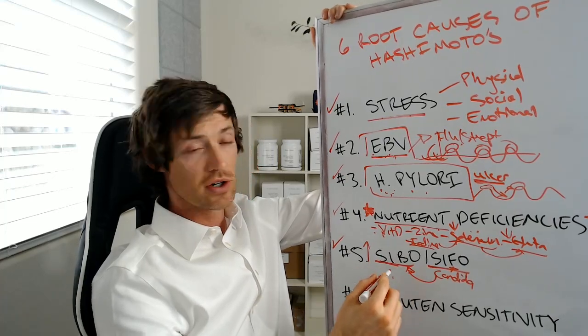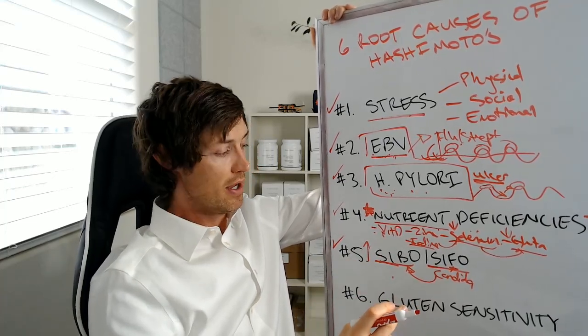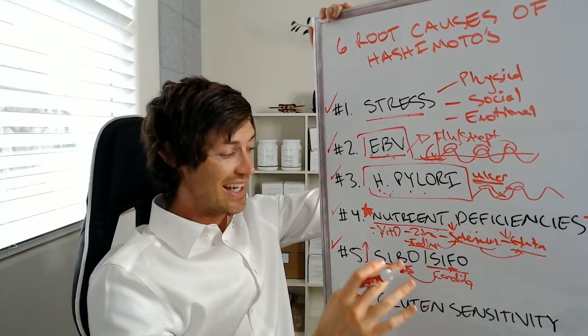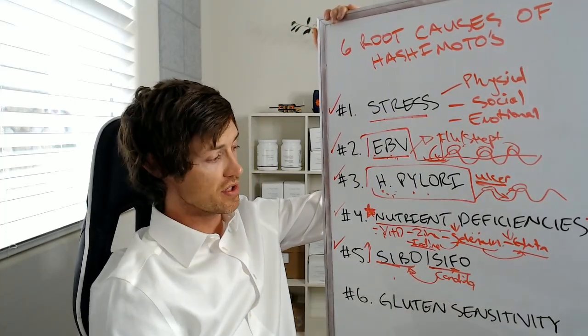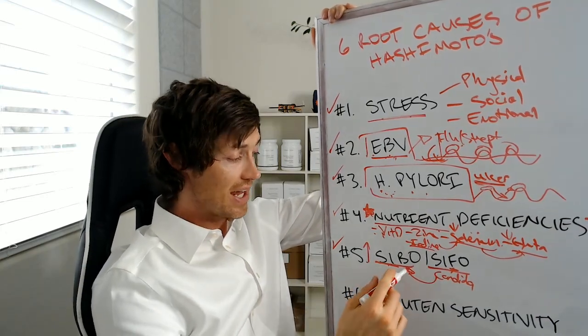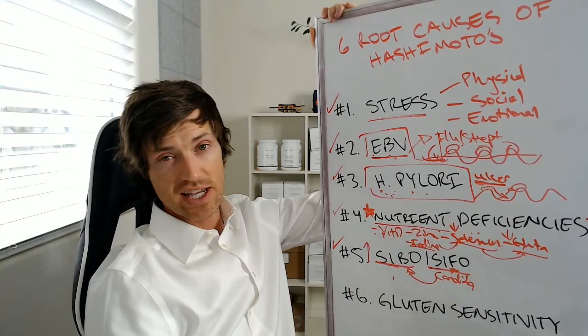So if you alter these bacterial concentrations in the wrong type of way, then it can lead to inflammation in the gut, which can then lead to autoimmunity and ultimately Hashimoto's thyroiditis. Now, both of these conditions can be tested for and they can be treated. It's actually not too difficult.